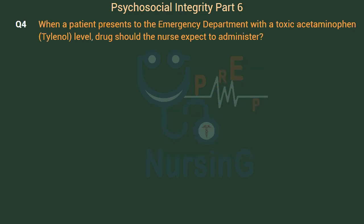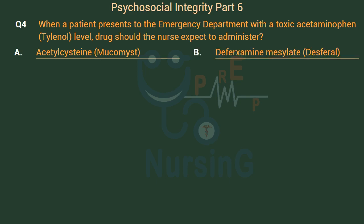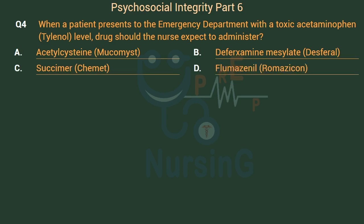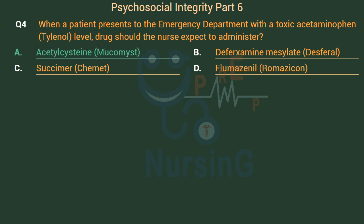When a patient presents to the emergency department with a toxic acetaminophen (Tylenol) level, which drug should the nurse expect to administer? Option A: Acetylcysteine (Mucomyst). Option B: Deferoxamine mesylate (Desferal). Option C: Succimer (Chemet). Option D: Flumazenil (Romazicon). The right answer is Option A — Acetylcysteine (Mucomyst).